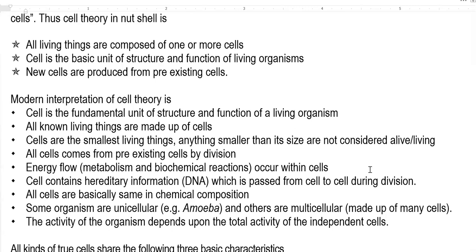Some organisms are unicellular whereas others are multicellular. Organisms such as an amoeba — which is a protist, a protozoa — or bacteria are unicellular in nature, whereas other living organisms such as animals are multicellular. The activity of the organism depends upon the total activity of the independent cells. The whole functioning of the organism is dependent upon the total activity of the individual cells present in that organism — a point put forth by Xavier Bichat.